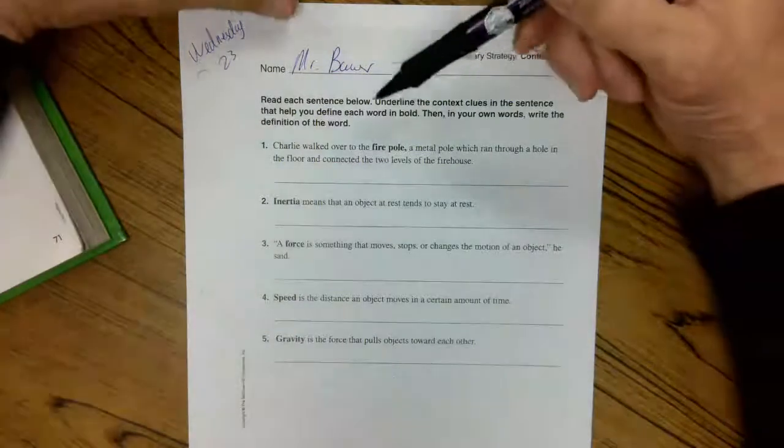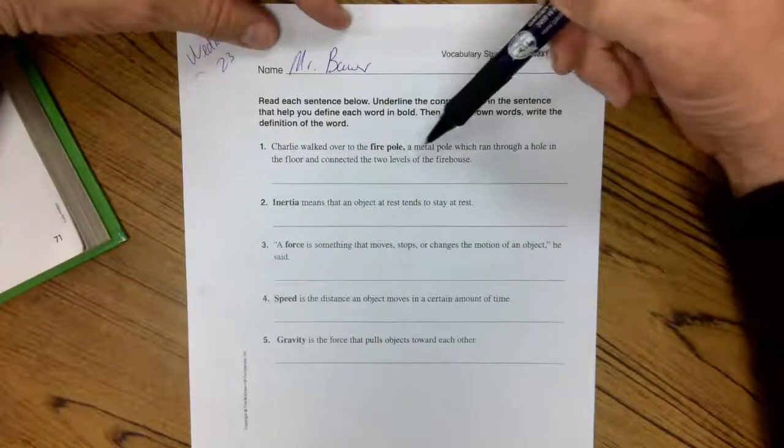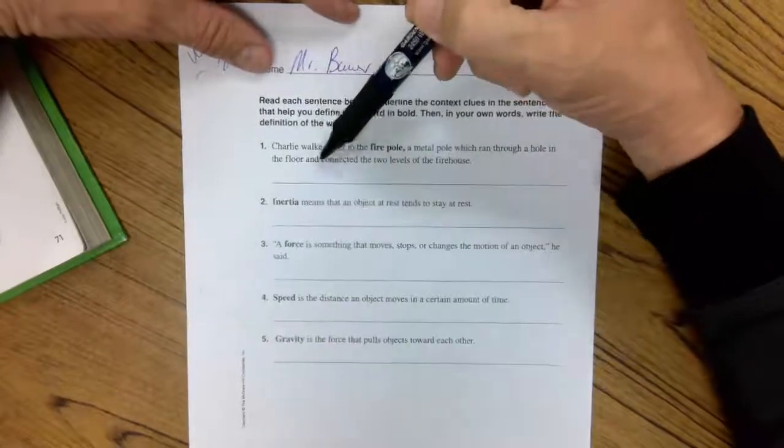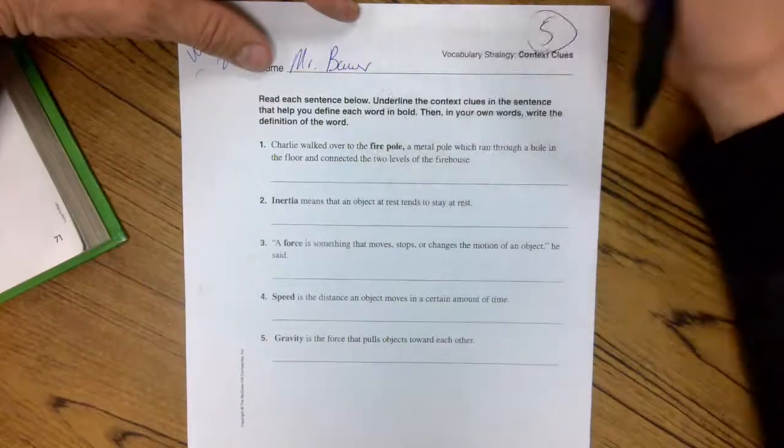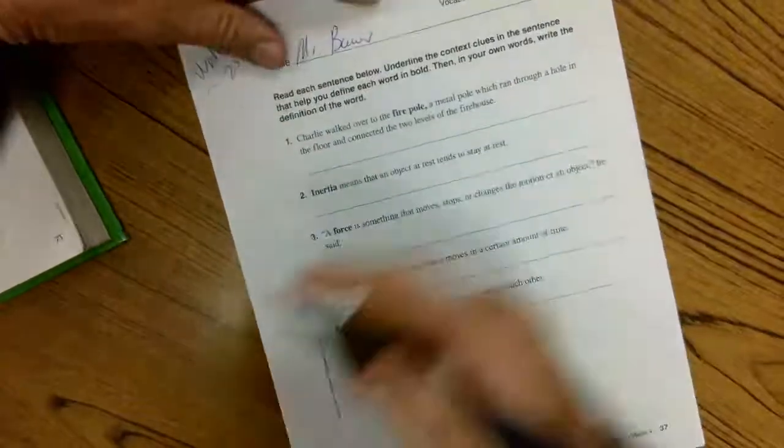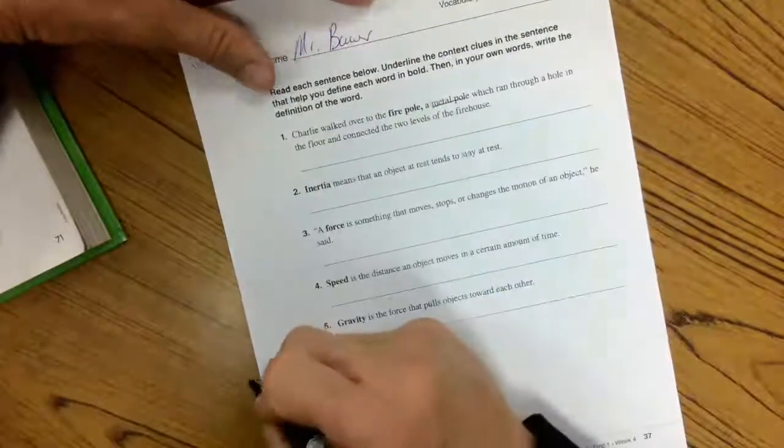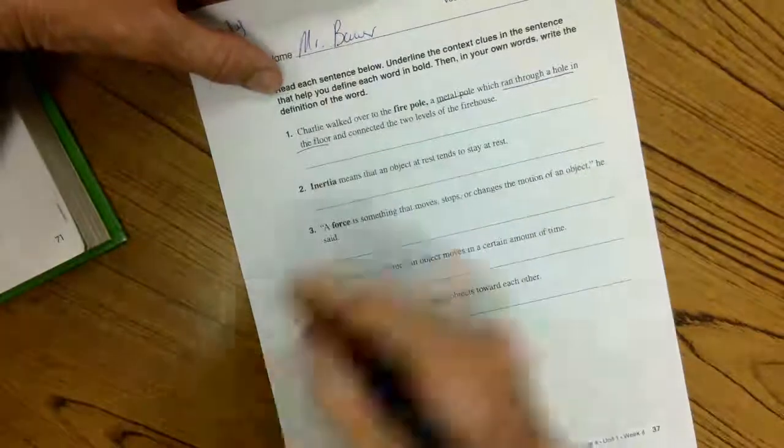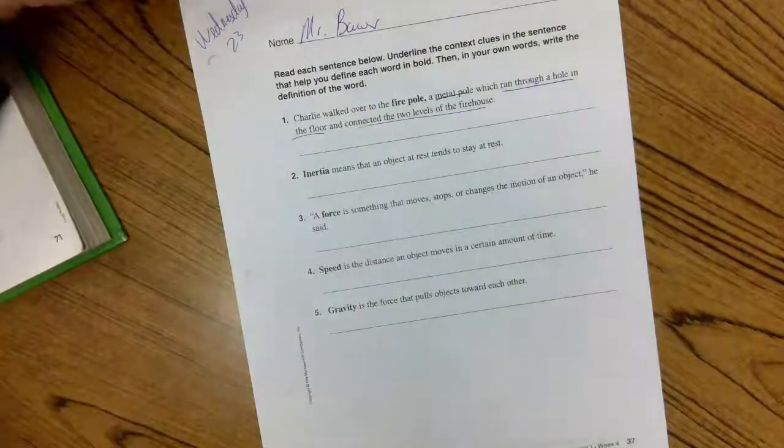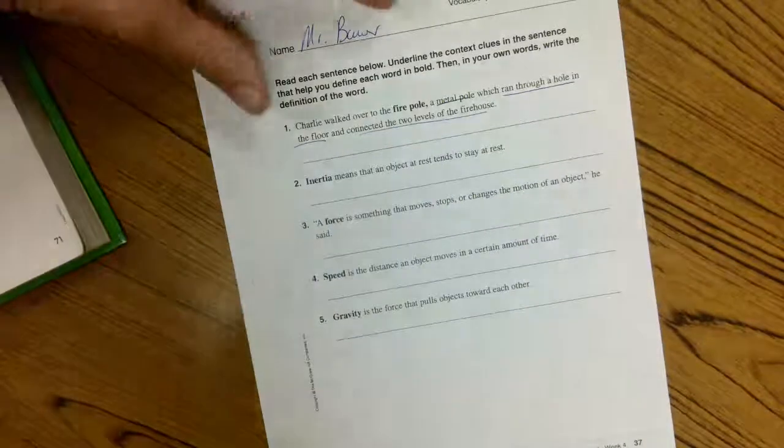Charlie walked over to the fire pole, comma, a metal pole which ran through a hole in the floor and connected the two levels of the firehouse. So the word is fire pole, and now we're trying to figure out what it is. Well, context clues. A metal pole ran through a hole in the floor and connected the two levels of the firehouse. We need almost all of that to help us define what a fire pole is.